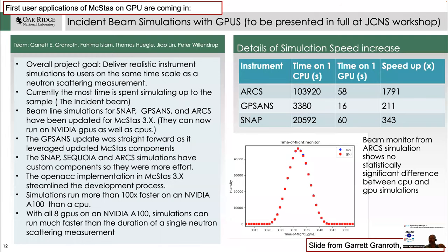I also have a report from Garrett Greenroyd at Oak Ridge, where they've been running incident beam simulations for a number of Spallation Neutron Source instruments — ARCS, GPSANS, and SNAP — and they find speedups of more than two and even three orders of magnitude. The maximum speedup I foresaw was a factor of 1,000, but in this case they must have been running with a slightly slower CPU, clocking in at almost 2,000 — three orders of magnitude, very nice. As shown in the lower graph, simulations run on CPU and GPU don't differ statistically. We are now in a situation where you may run supportive simulations on GPU that are as fast or faster than the ongoing experiment.